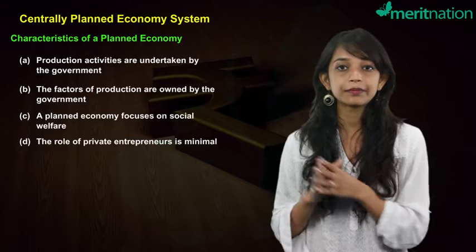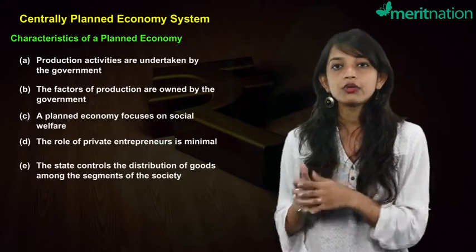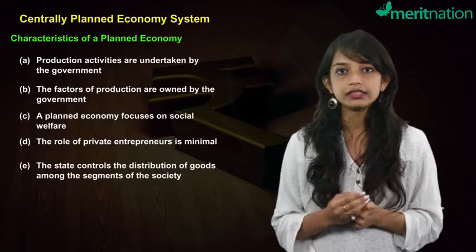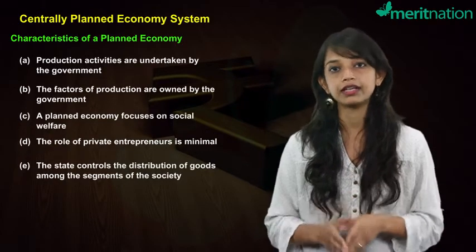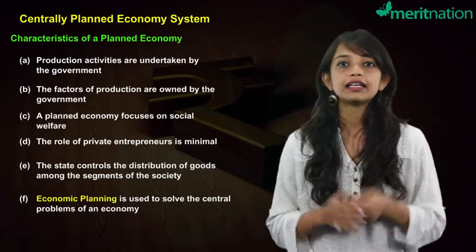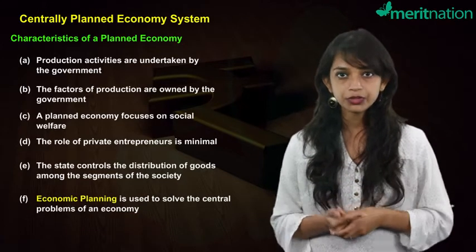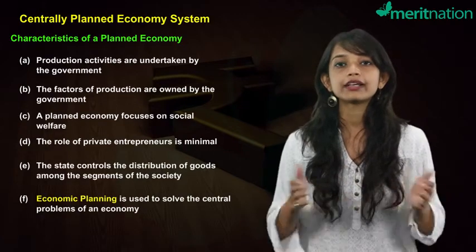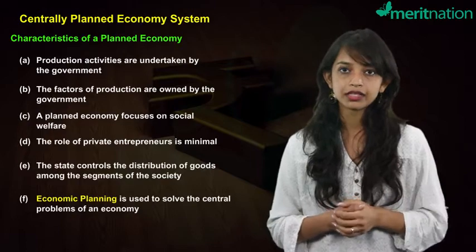Fourth, the role of private entrepreneurs is kept minimal. Fifth, the state not only manages production activities but also governs and controls the distribution of goods and services among various sections of society. Lastly, the three central problems — what to produce, how to produce, and for whom to produce — are solved by economic planning, that is the planning mechanism.